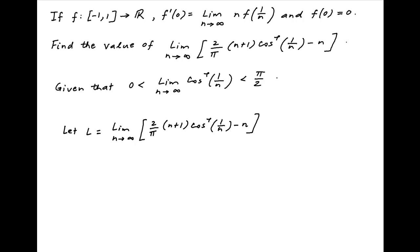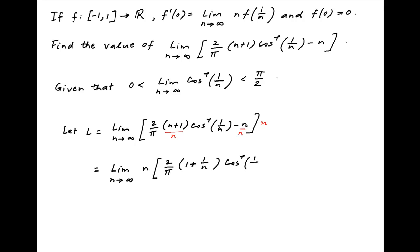Divide the expression in the square brackets by n and multiply outside the brackets by n. This limit can be written as the limit as n tends to infinity of n times, in brackets, 2 upon pi times 1 plus 1 upon n times cos inverse of 1 upon n, minus 1.